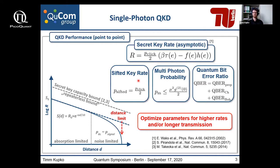If you want to measure the performance of quantum key distribution systems, we should talk about secret key rates. The secret key rates for practical single photon sources differ a little bit from those of the decoy state protocol secret key rate equations.